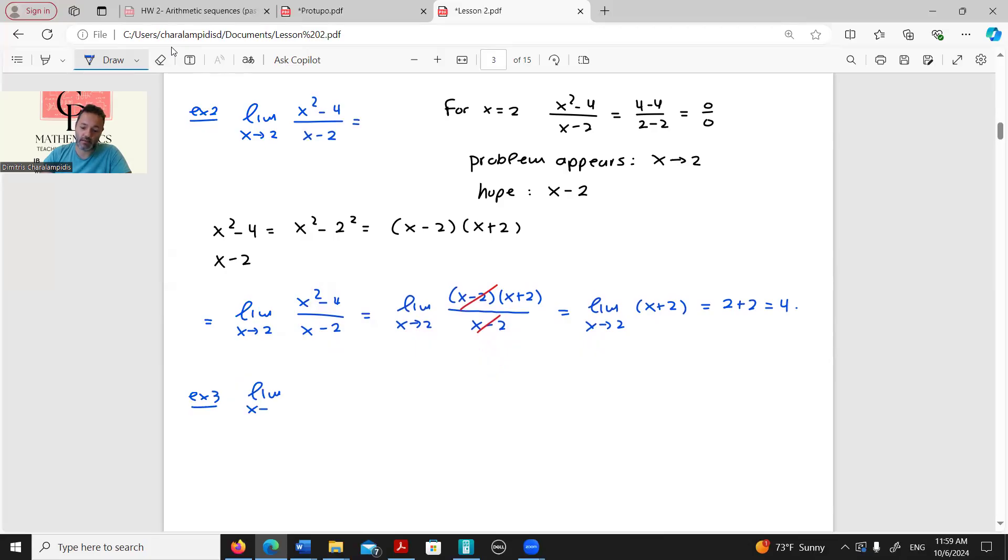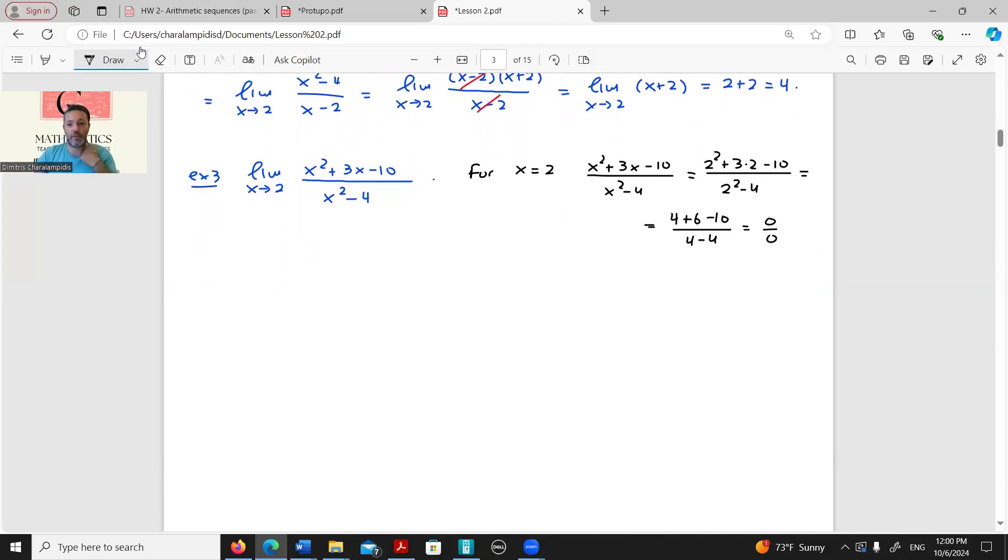Let's see a third and last example. Limit when x tends to 2 of x squared plus 3x minus 10 over x squared minus 4. So once again, my first action is to substitute. For x equals 2, the expression becomes 2 squared plus 3 times 2 minus 10 over 2 squared minus 4, which is the same as 4 plus 6 minus 10 over 4 minus 4, which is an indeterminate form of 0 over 0.